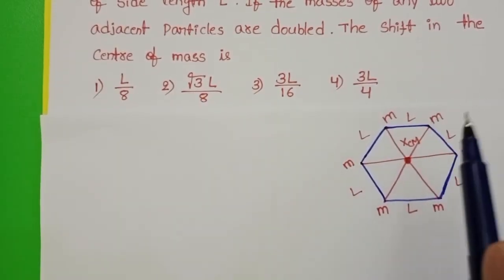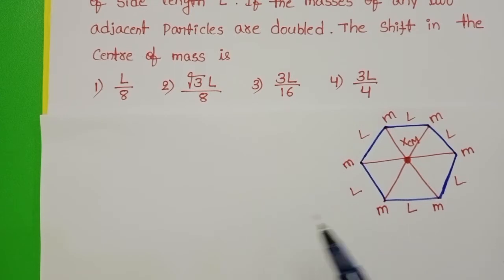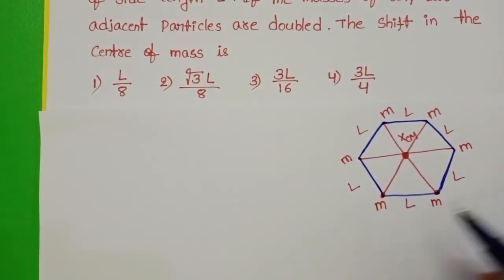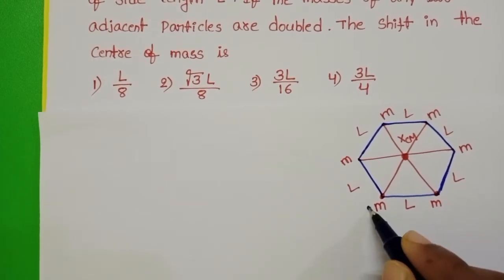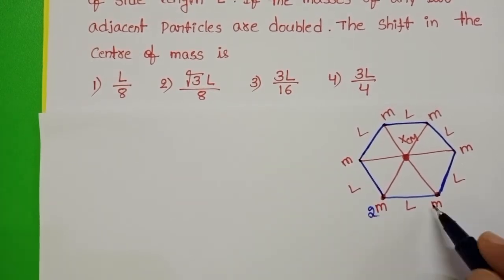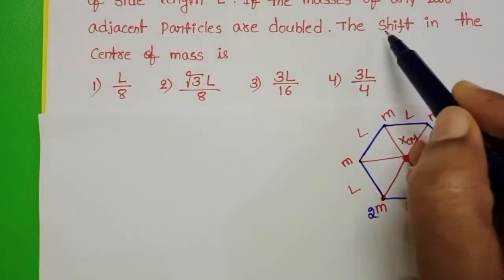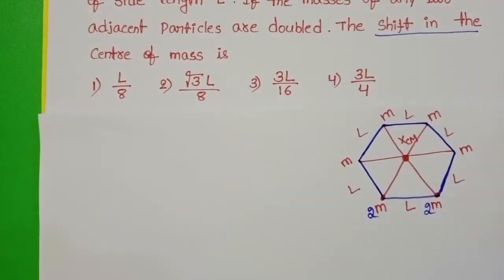If the masses of any two adjacent particles are doubled, so let us take these two corners. Mass is doubled, so mass of this particle is 2M and here also 2M. Now we have to find out the shift in the center of mass.